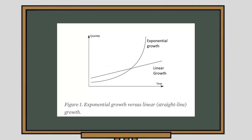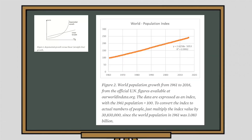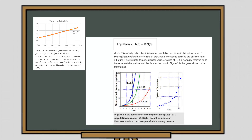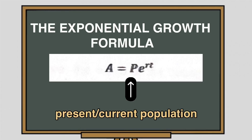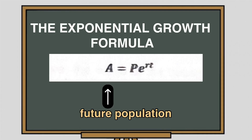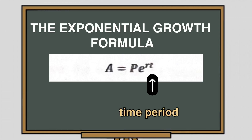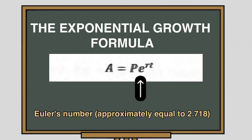Mathematicians have formulated equations to calculate current population and growth rates in order to predict the future population. A simple equation for population projection is the exponential growth formula given by A equals P times E raised to RT, where P is the current population at present, A is the future population, R is the growth rate, T is the time period, and E is Euler's number, an irrational number approximately equal to 2.718.